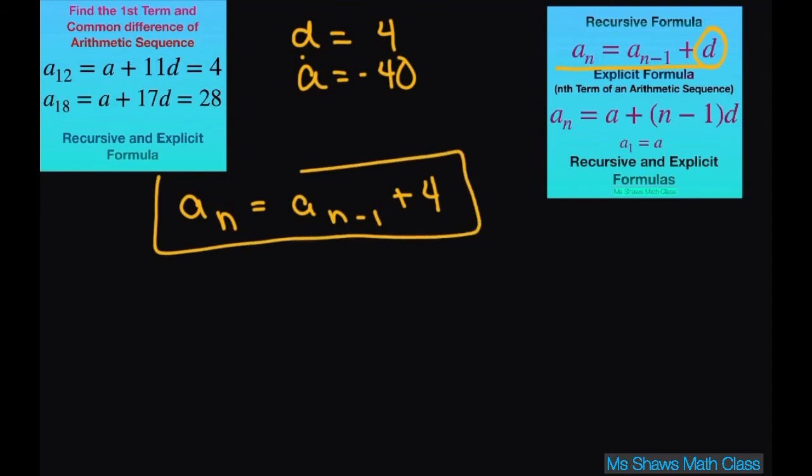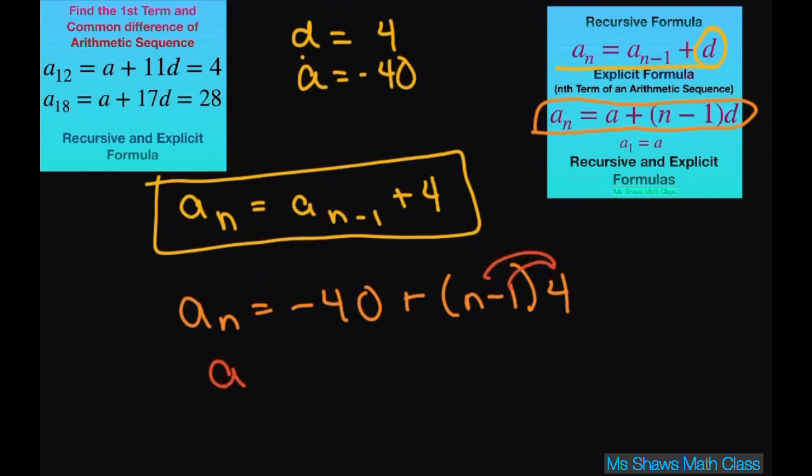Once you have your first term and your common difference you can write the formulas. The same thing with our explicit formula: a sub n equals, now you have to fill in your a and d. Your a is negative 40 plus n minus 1 and your d is 4. The only thing with this one is you have to simplify. So this gives you a sub n equals negative 40 plus 4n minus 4. Combine those two and you get a sub n equals negative 44 plus 4n.